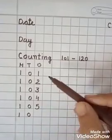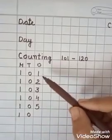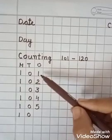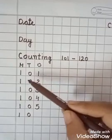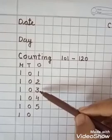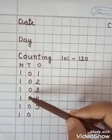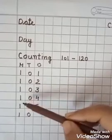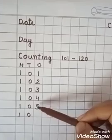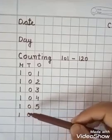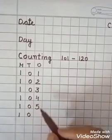Now, again, speak with me. 1, 0, 1 — 101. 102, it's 102. 1, 0, 3 — 103. 1, 0, 4 — 104. 1, 0, 5 — 105. And now 1, 0, 6.